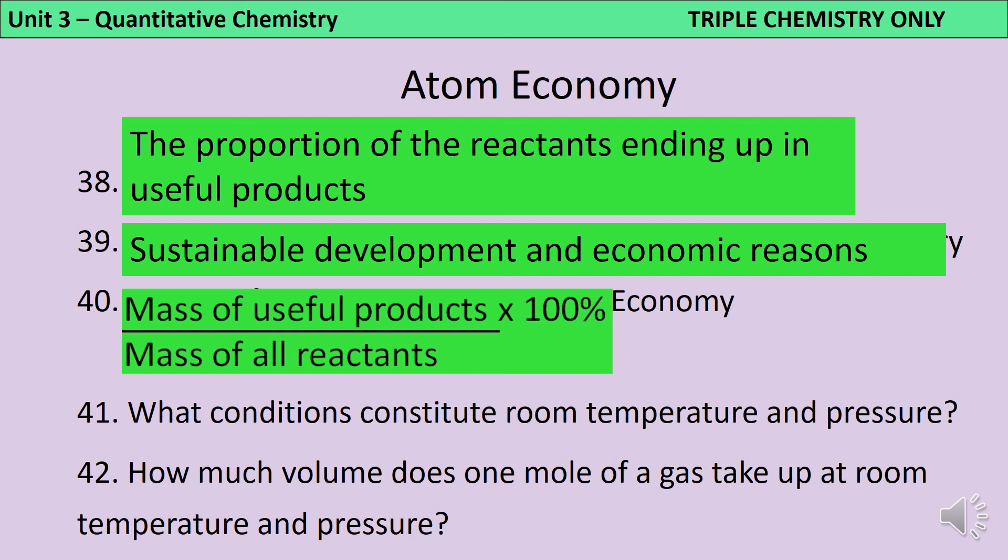Room temperature and pressure for AQA GCSE chemistry are taken as being 20 degrees C and 1 atmospheric pressure. And at that temperature and pressure, 1 mole of any gas takes up 24 decimetres cubed.